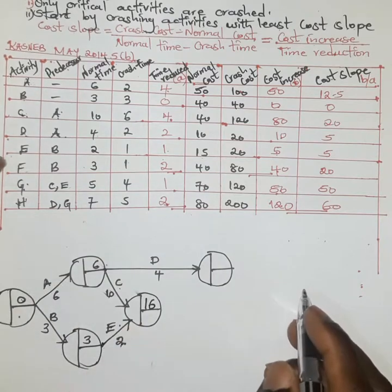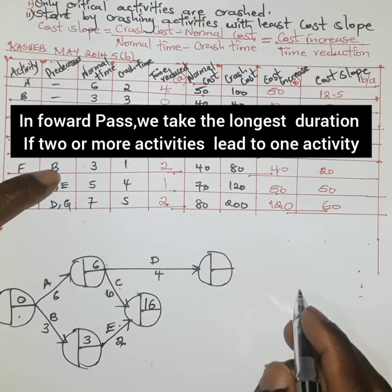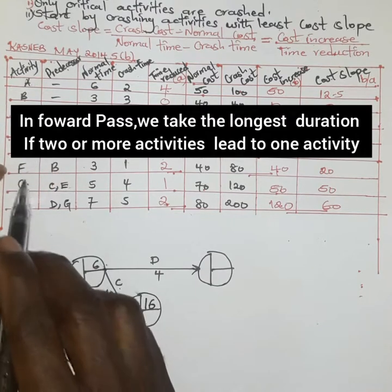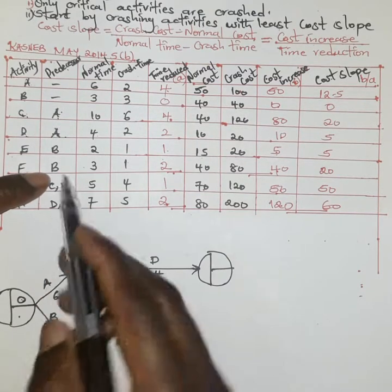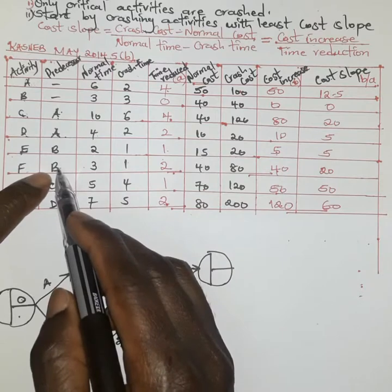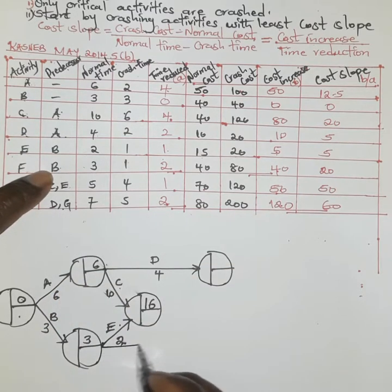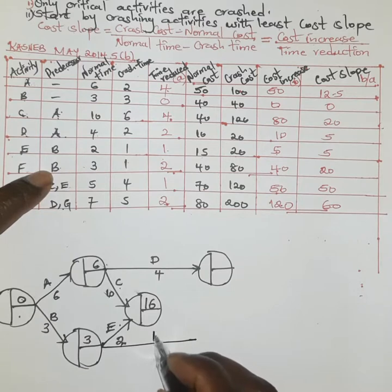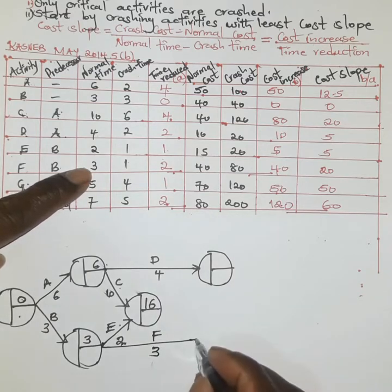Activity F begins as soon as B completes. Since F does not affect any other activity and we don't yet know its terminal node, we draw it and leave it temporarily. Activity F takes a duration of three weeks.